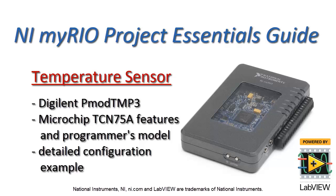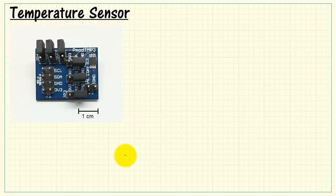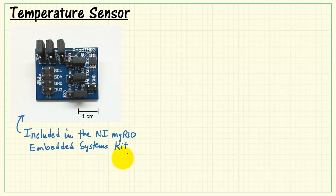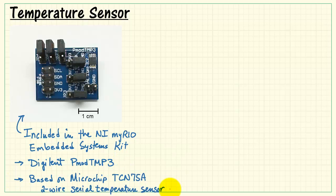Let's take a look at this temperature sensor from Digilent. It's based on the Microchip TCN75A temperature sensor. We'll review the features and programmer's model for this sensor and also take a look at a detailed configuration example. This is the sensor that's included in the NI MyRIO Embedded Systems Kit. It's the Digilent PMOD TMP3 based on the Microchip TCN75A located right here on the board.